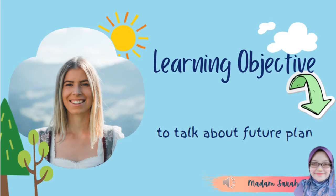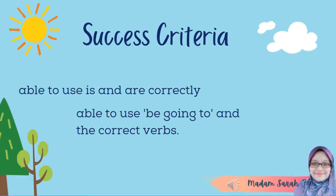Now, let's take a look at our learning objective. At the end of the lesson, you will be able to talk about the future plan. And our success criteria for today are: 1. Able to use is and are correctly. 2. Able to use be going to and the correct verbs.